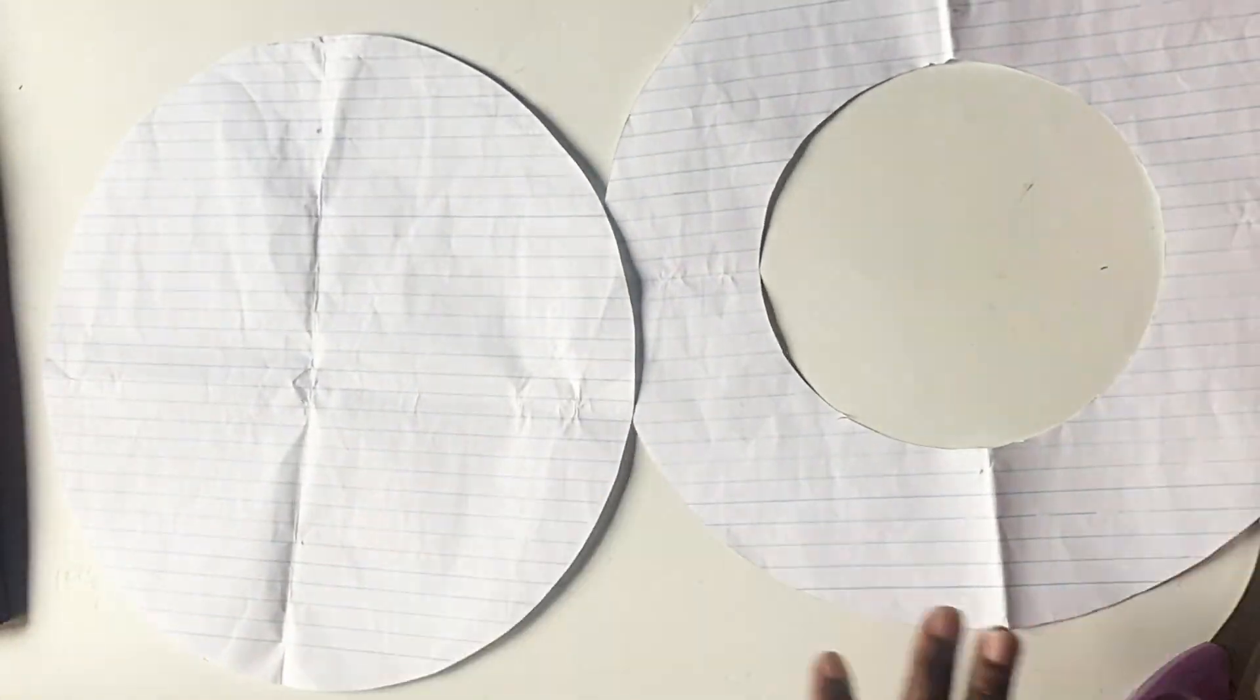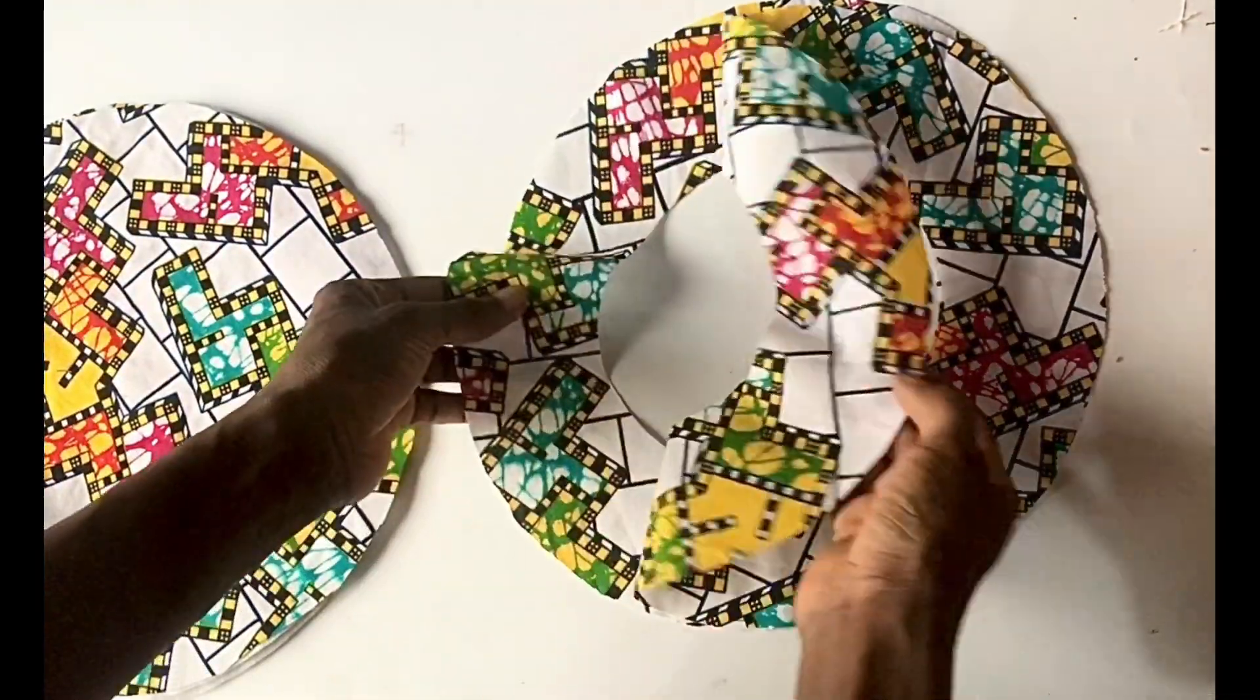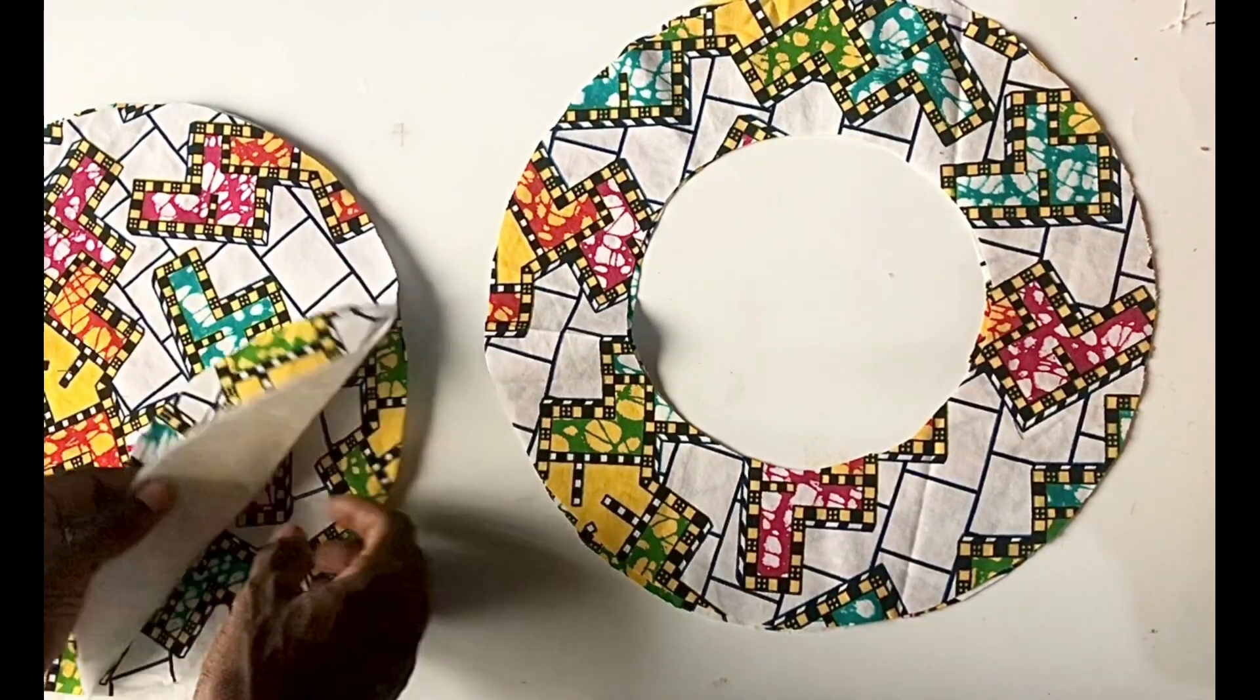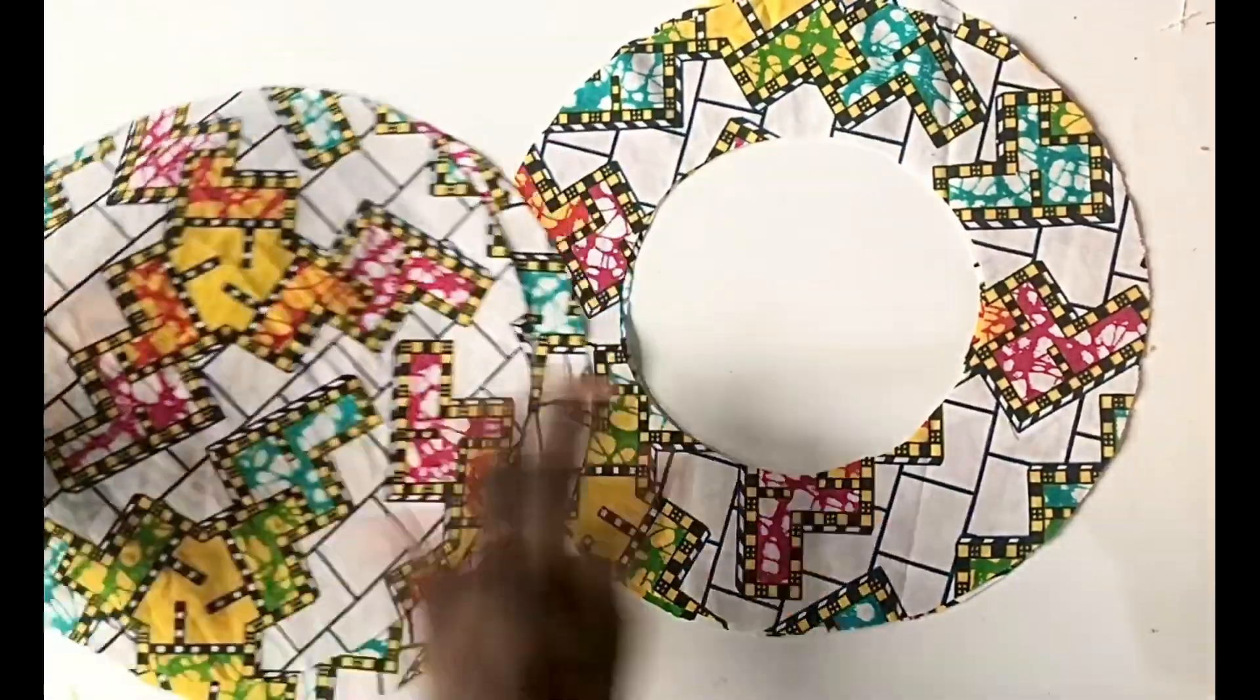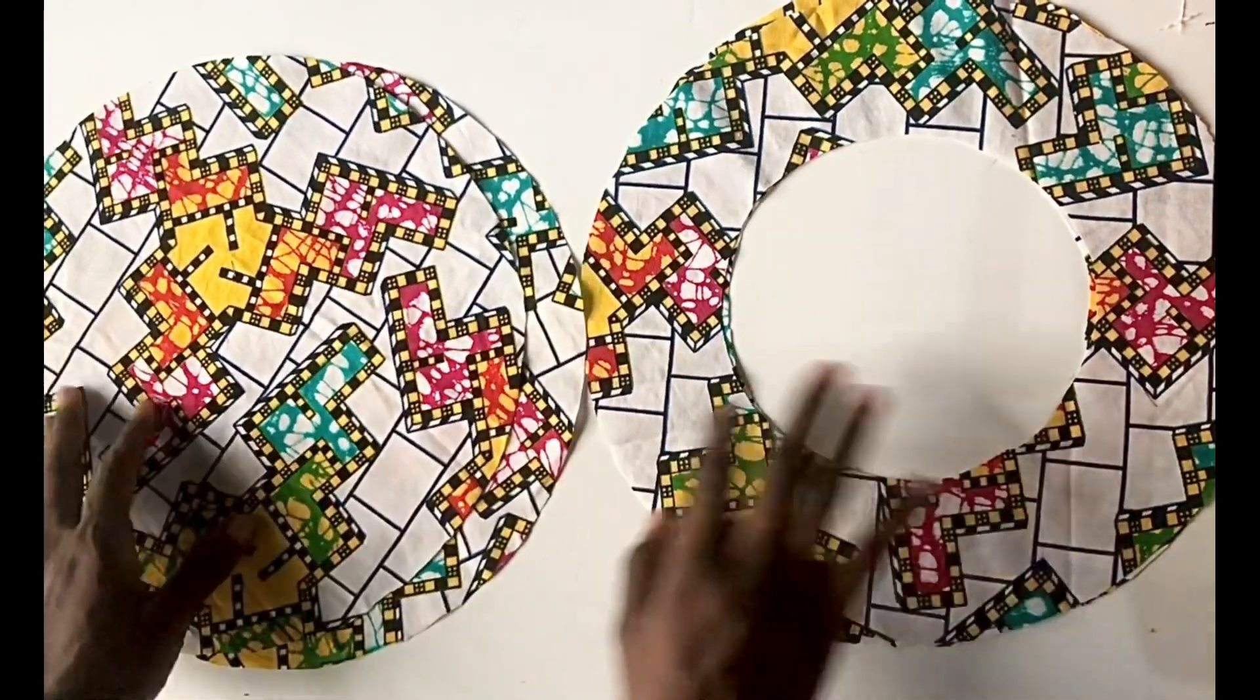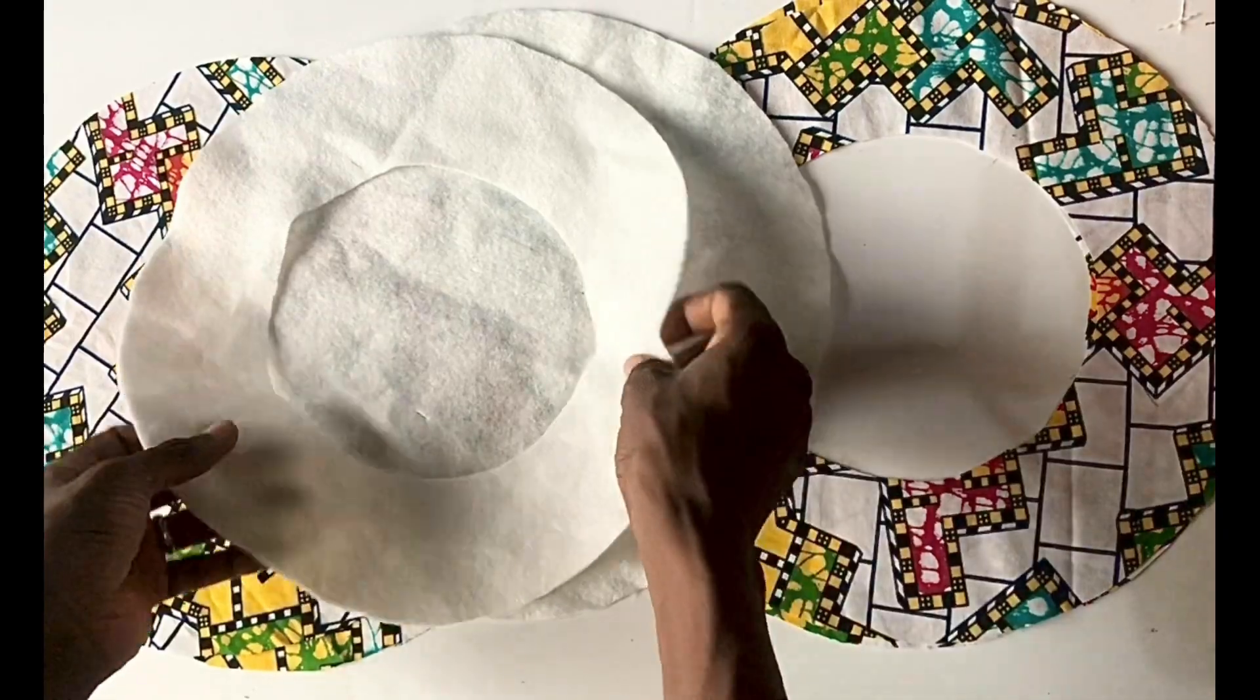After that I went ahead to cut out my fabric that I want to use for my beret. For the hollow pattern I cut out two pieces, and the solid one I also cut out two, then the facing I cut out one each for them. So you can see we have two for the top of the berets and two for the flow, and one each for the facing. I'll go ahead and arrange my fabric and facing.